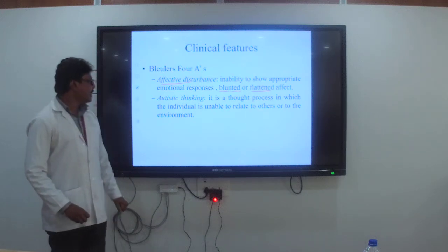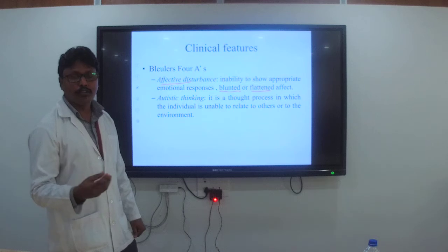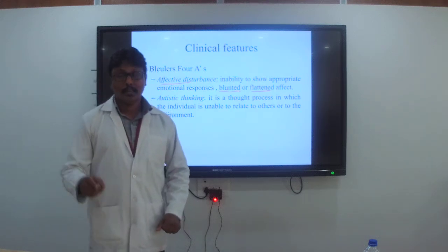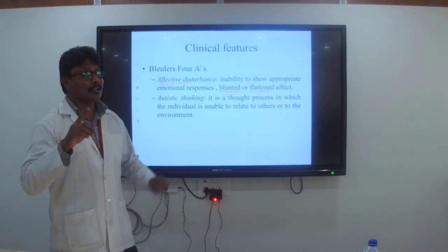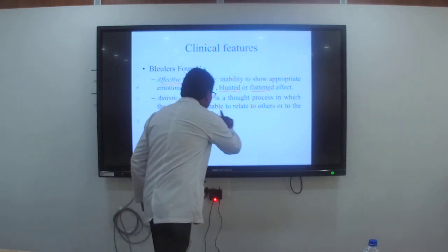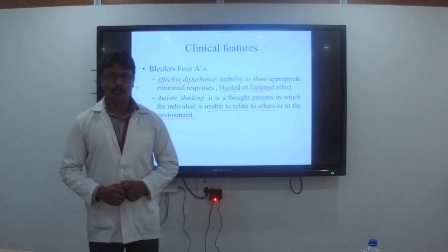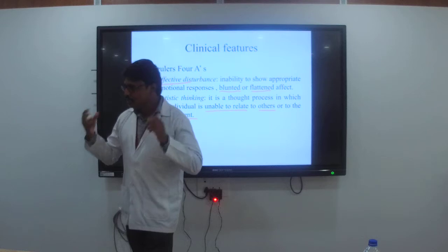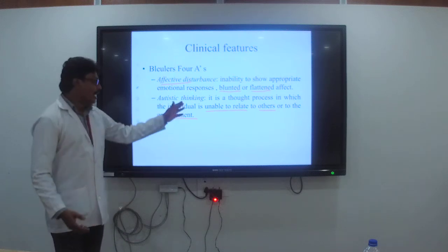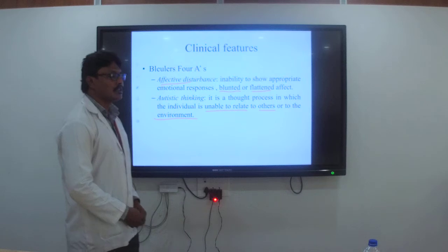The second A is Autistic Thinking. The individual suffering from schizophrenia has autistic thinking totally disturbed. As seen in the definition, there are disturbances in thinking; therefore the patient is unable to relate with the surrounding environment — unable to relate to others as well as to the nearby environment. The patient's cognitive skills are totally disturbed, so they cannot think properly, leading to autistic thinking unrelated to others and the environment.